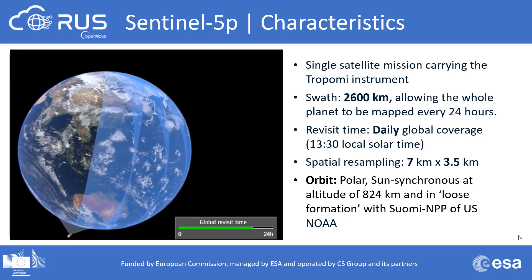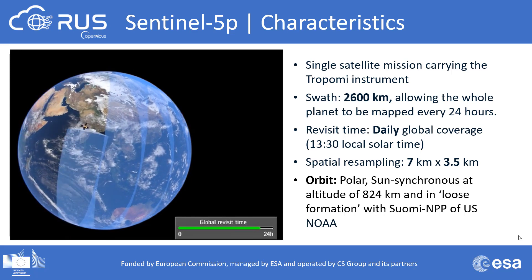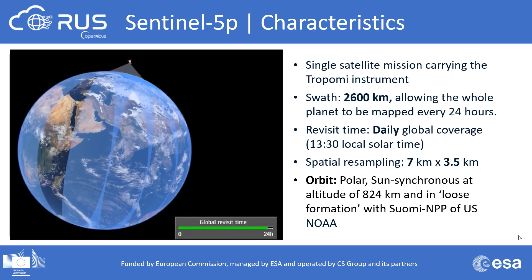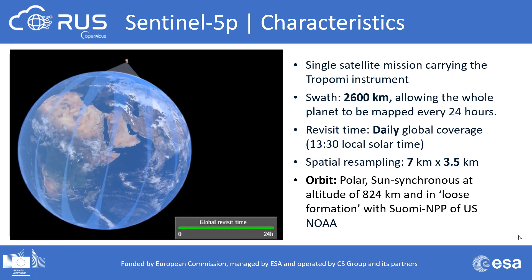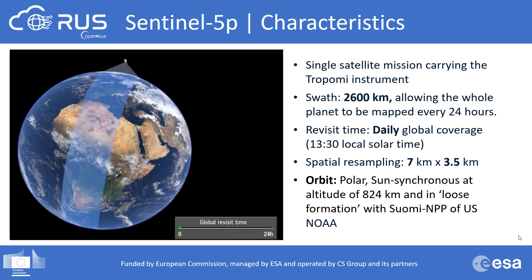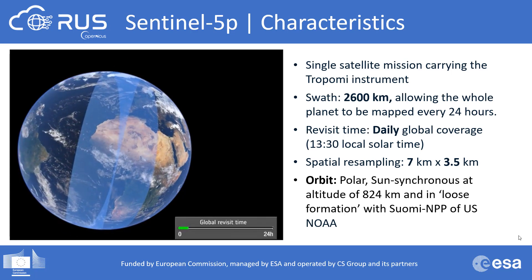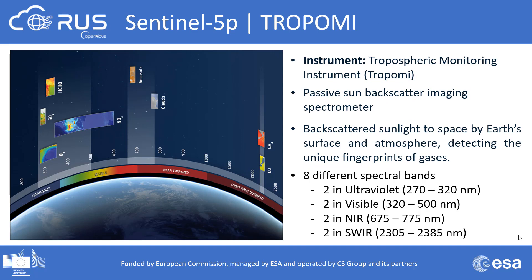Sentinel-5P follows a polar sun-synchronous orbit in loose formation with the Suomi NPP mission from NOAA, orbiting 3.5 minutes behind it. Suomi NPP provides a co-located high-resolution cloud mask, which is important for calculating methane. The TROPOMI instrument measures in ultraviolet and visible, near-infrared, and short-wave infrared spectral bands, enabling a wide range of pollutants — such as nitrogen dioxide, ozone, formaldehyde, sulfur dioxide, methane, and carbon monoxide — to be imaged more accurately than ever before.